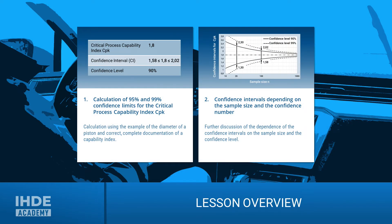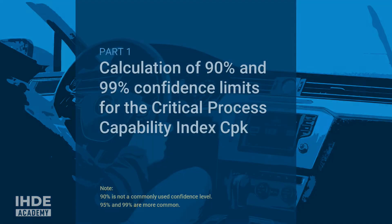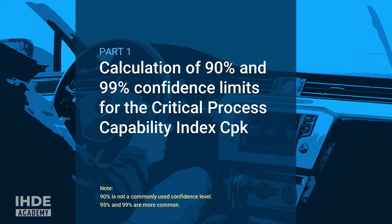This lesson is divided into two chapters. In the first chapter, we will calculate two confidence intervals — one for the 95% confidence level and the other for a 99% confidence level — both for the same sample size. In the second chapter, we look at the influence of the confidence level and the sample size on the width of the confidence interval. Note: 90% is not a commonly used confidence level; it was chosen here for training purposes only.